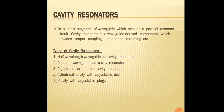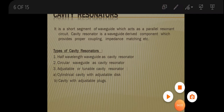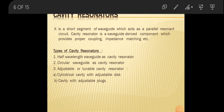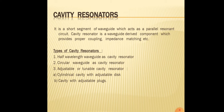The cavity resonator is an important microwave device. It is a waveguide-derived component which provides proper coupling of devices and impedance matching. The types of cavity resonator are: half wavelength waveguide as cavity resonator, circular waveguide as cavity resonator, and adjustable or tunable cavity resonator.